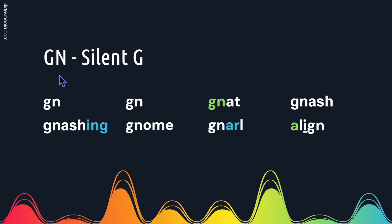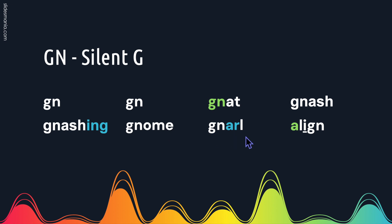If you start a word with G and N, the G will be silent. So this sound is mm. Gnat. Gnash. Gnashing. Gnome. A-R says R. Gnarl.